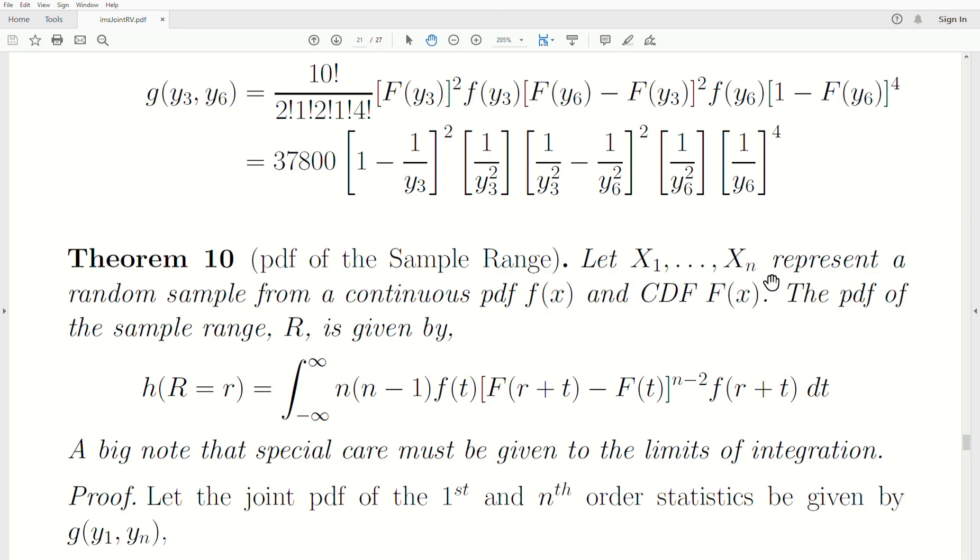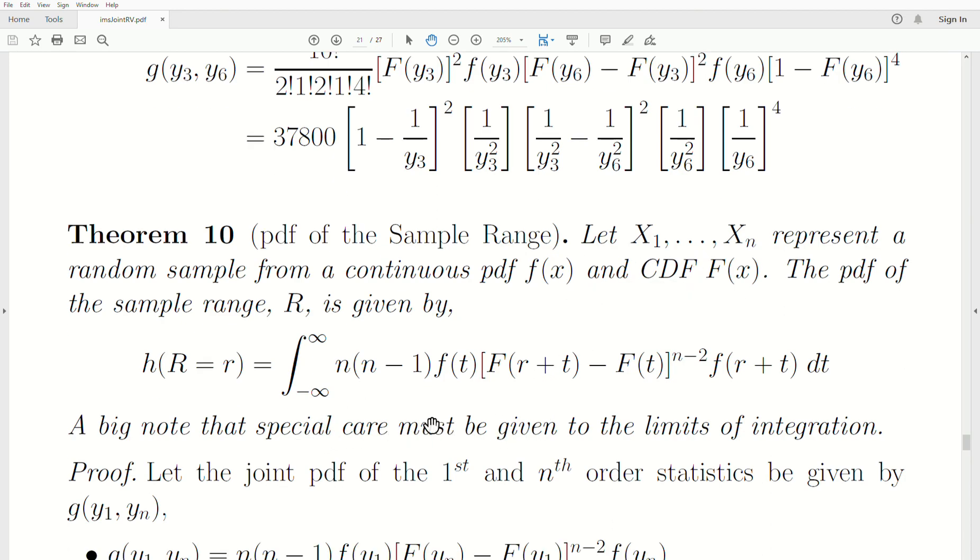Let X1 through Xn represent a random sample from a continuous PDF f(x) and CDF capital F(x). The PDF of the sample range is given by this equation. We're integrating out dt from this equation here, and that little f and capital F are from the original PDF and CDF. Now here's a big note: special care must be given to the limits of integration. When you use this formula in practice, you don't put negative infinity to infinity. You have to know what the domain is of our original data, and that's what goes here.